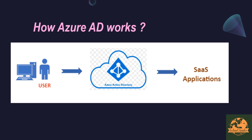This is the authentication back-end for the particular application. In the back-end process, the active directory work is completed. This is the cloud-based product. On-premise active directory is separate. People are often confused between Active Directory and Azure Active Directory — Active Directory is an on-premise component, while Azure Active Directory is a completely cloud-based component.